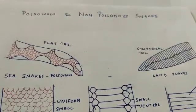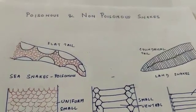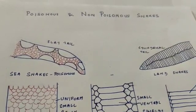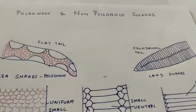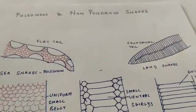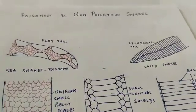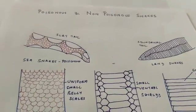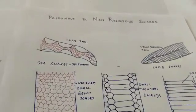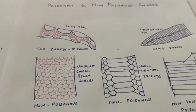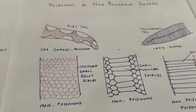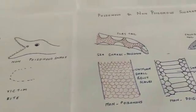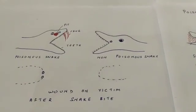Hello everybody. Today we will discuss poisonous and non-poisonous snakes. There are a couple of features which you have to identify in a snake. Let us understand what are the main features which you need to study, and afterwards we will consider other points of lesser importance. First of all, we need to understand that snakes are of two types: venomous and non-venomous.